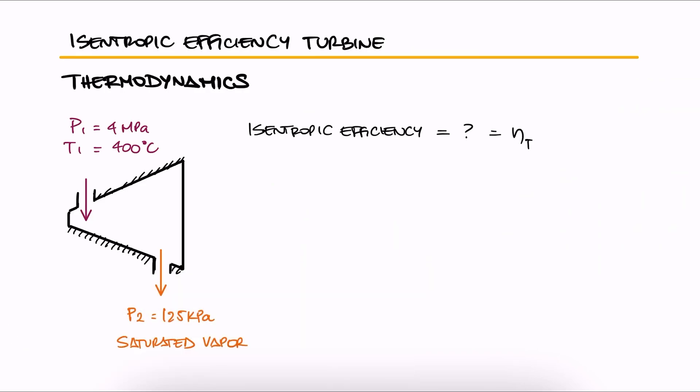In the main lecture video, we define the isentropic efficiency of a turbine as work out actual over work out isentropic. In terms of specific enthalpy, that would be h1 minus h2 over h1 minus h2s.